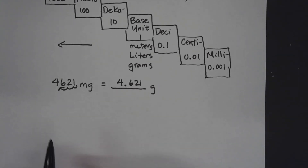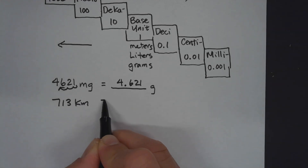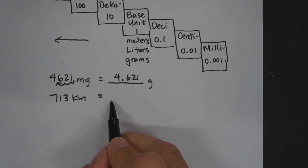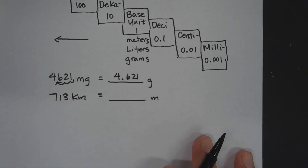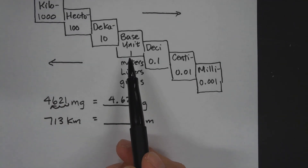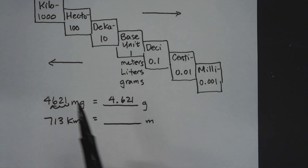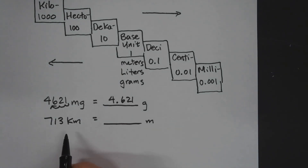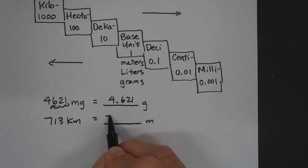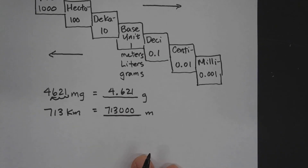Next we're going to go from 713 kilometers and convert that to meters. Kilometers is all the way to the left, meters is in the middle — we're moving to the right three places. So we move the decimal to the right three places, giving us 713,000 meters.